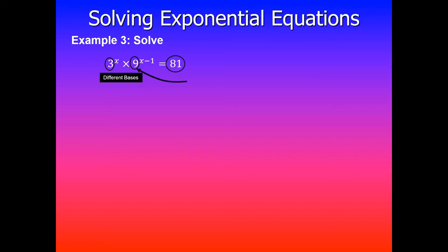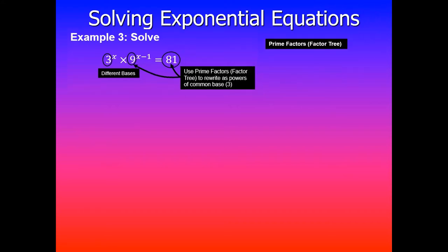So step number one, what we need to do is rewrite as powers of a common base, and it's 3 in this case. So we'll use factor tree to quickly split 81. 81 can be written as 9 × 9, and then we can split 9 into 3 × 3, and likewise the other 9 is 3 × 3 as well.